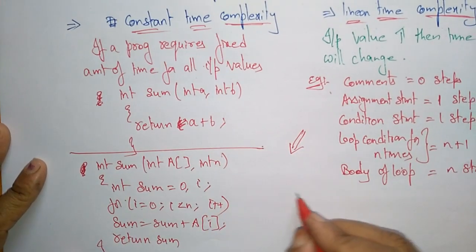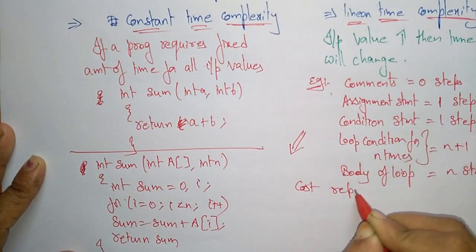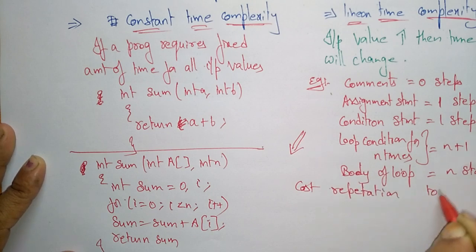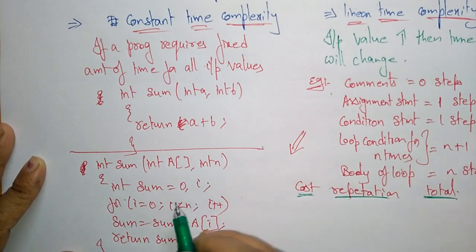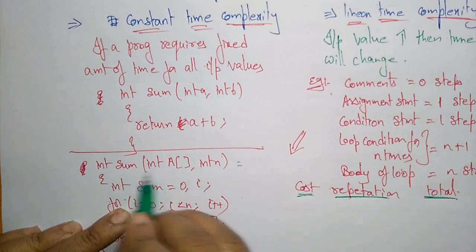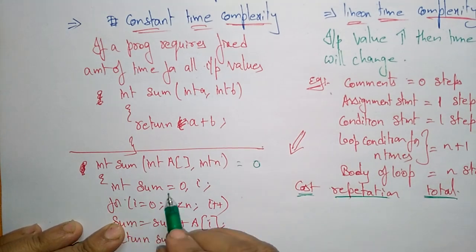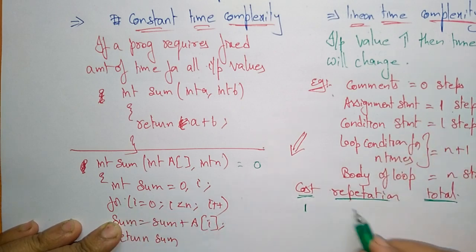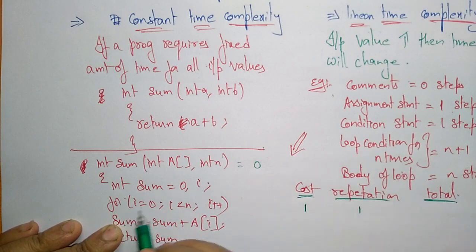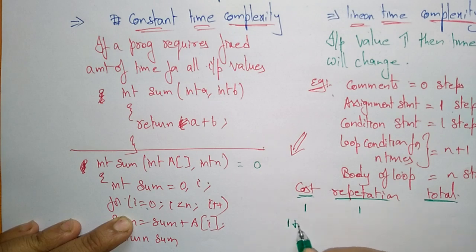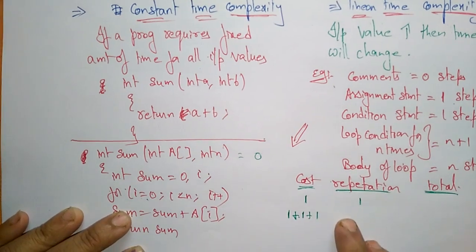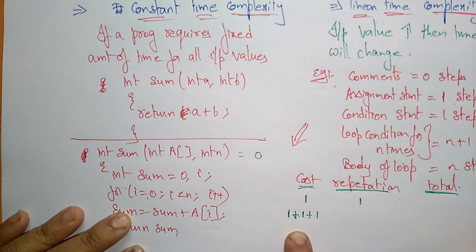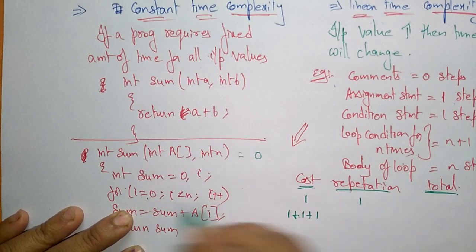Now let us calculate the cost, repetition, and total for this program. For int sum = 0, i — this is an assignment statement, so the cost is 1 and repetition is 1. For the for loop initialization i = 0, the assignment cost is 1. For the condition i less than n, the cost is 1 and since it is a loop condition running n times, the repetition is n plus 1.